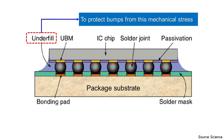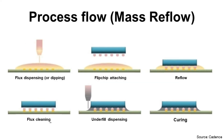The process flow is: flux dipping or dispensing, flip chip attaching, reflow and flux cleaning, underfill dispensing and curing. Bumps can be solder bumps or copper pillar bumps. This process flow is for mass reflow, which is one of the different processes of flip chip attach.